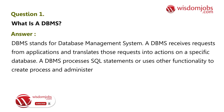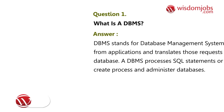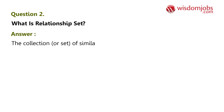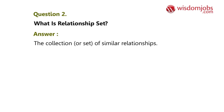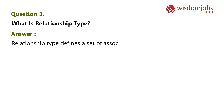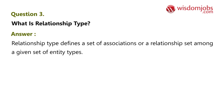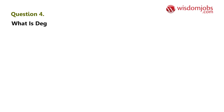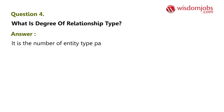Question 2: What is a relationship set? Answer: The collection or set of similar relationships. Question 3: What is relationship type? Answer: Relationship type defines a set of associations or a relationship set among a given set of entity types. Question 4: What is degree of relationship type? Answer: It is the number of entity types participating.